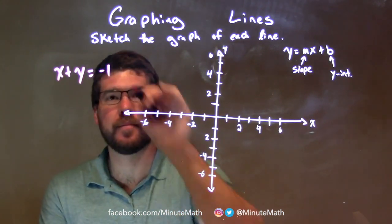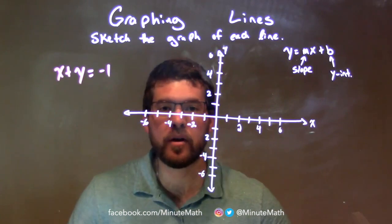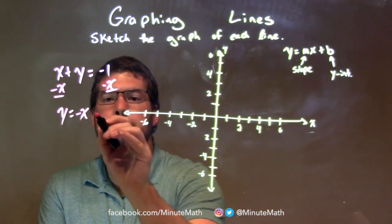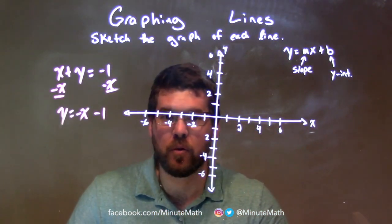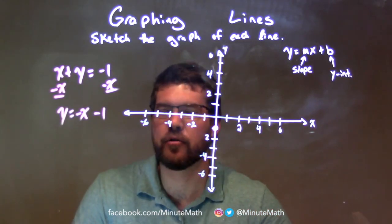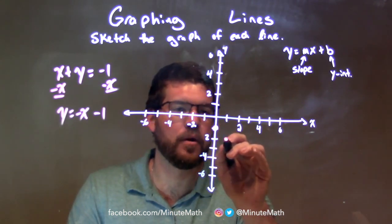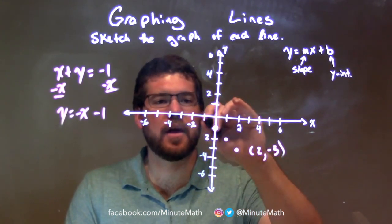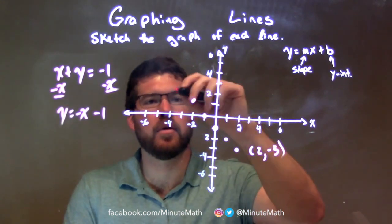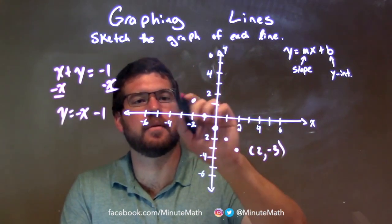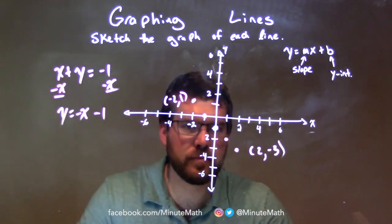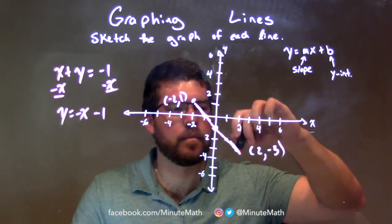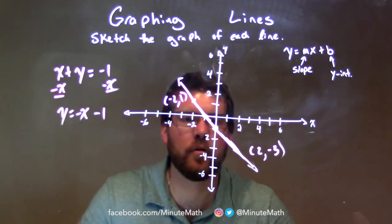x plus y equals negative 1. This is in standard form and I like to see it in slope-intercept form. I subtract x from both sides, leaving y equals negative x minus 1. Negative 1 is our y-intercept — negative 1 right there. And our slope is negative 1 as well — down 1 over 1 to the right, and down 1 over 1 to the right. The last point here is 2, negative 3. We also go up 1 to the left 1, giving us negative 2, positive 1. We connect these dots and there we have our graph.